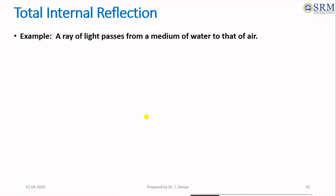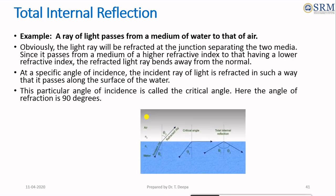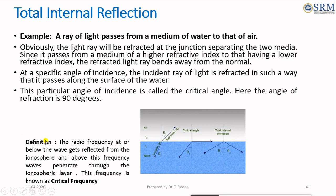What is total internal reflection? Considering a ray of light passing from the medium of water into air, the complete reflection of the ray of light within the medium of water or glass from the surrounding surface back into the medium. This phenomenon occurs if the angle of incidence is greater than a certain limiting angle called the critical angle. The radio frequency above which the wave penetrates through the ionospheric layer is called critical frequency.